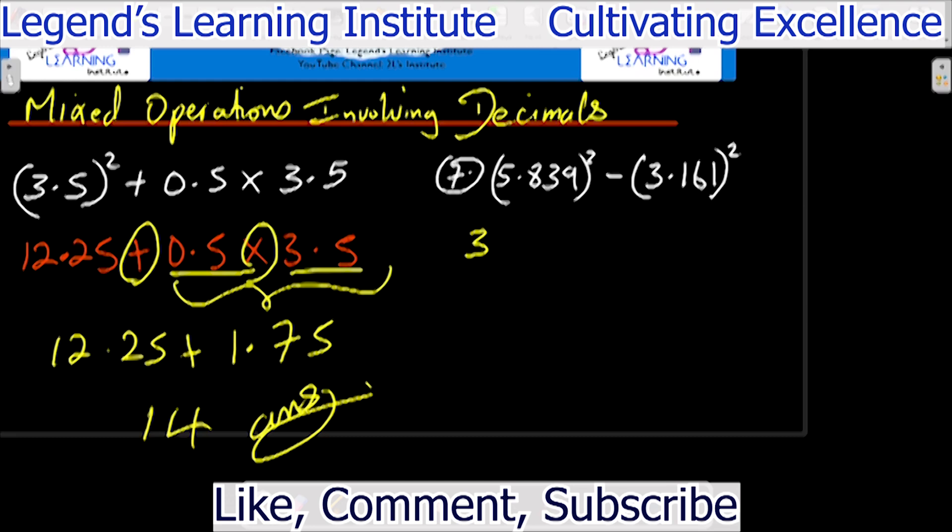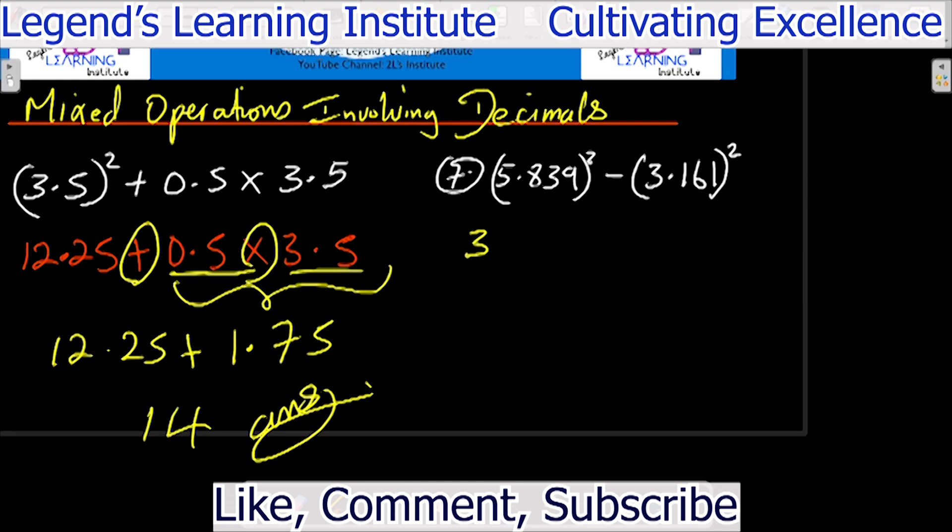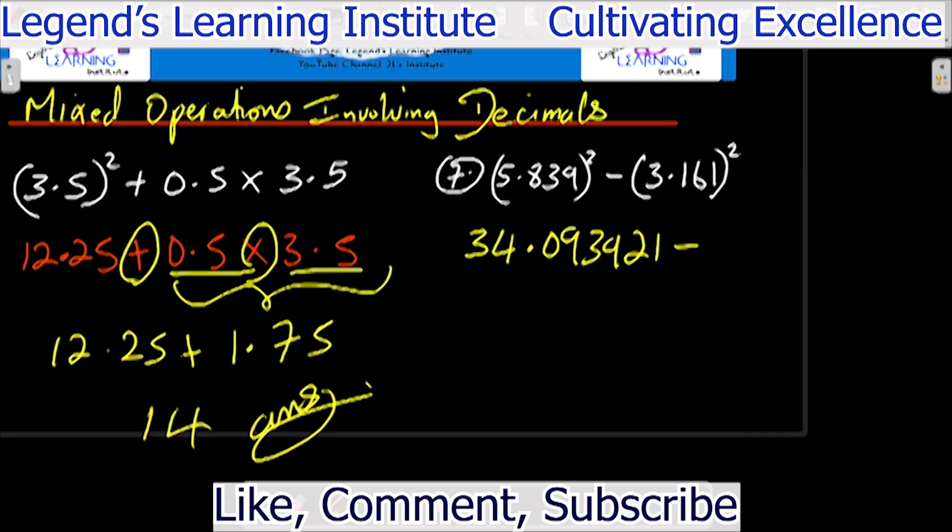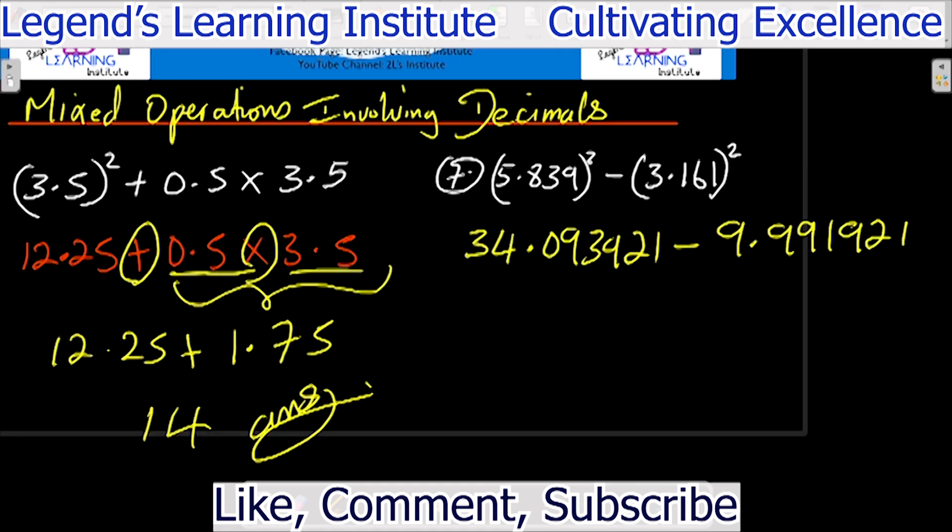So when I square 5.839 on the calculator I get 34.093921. Subtract and then 3.161 squared, that's 9.991921. And then subtracting the two numbers, so 34.093921 subtract 9.991921 gives us 24.102 as our answer.